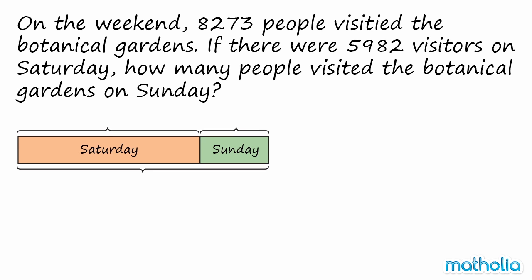Let's use a model to help find the answer. We know that on the weekend, 8,273 people visited the Botanical Gardens. We also know there were 5,982 visitors on Saturday. To find the number of visitors on Sunday, we need to find the difference between the two numbers. We must subtract.